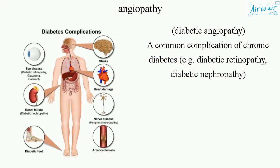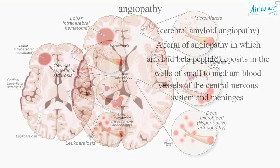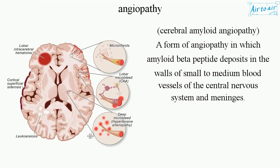Diabetic angiopathy is a common complication of chronic diabetes, e.g. diabetic retinopathy and diabetic nephropathy. Cerebral amyloid angiopathy is a form of angiopathy in which amyloid beta-peptide deposits in the walls of small to medium blood vessels of the central nervous system and meninges.